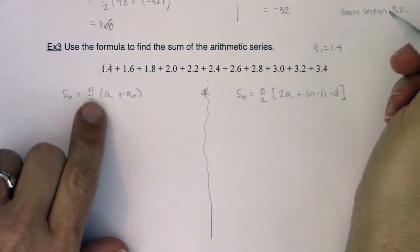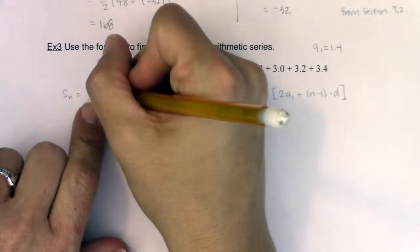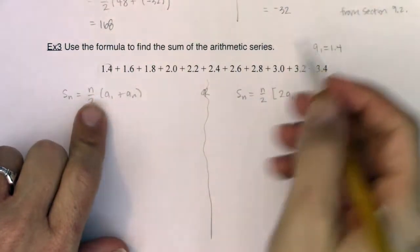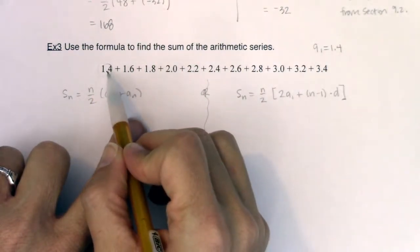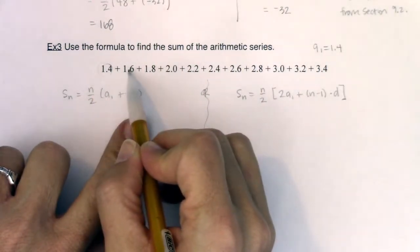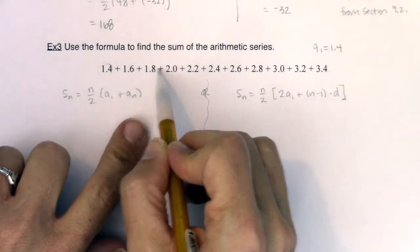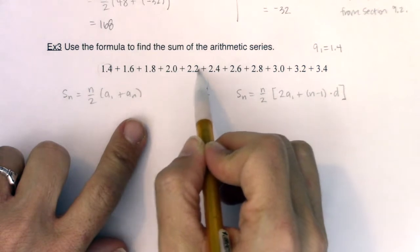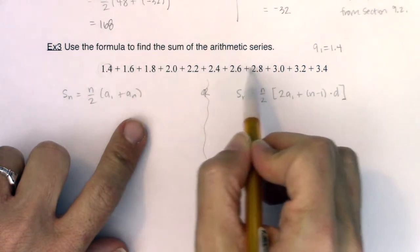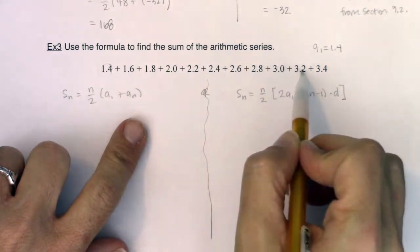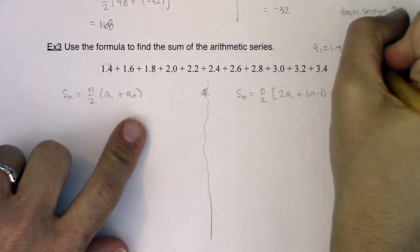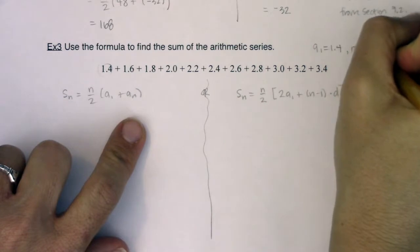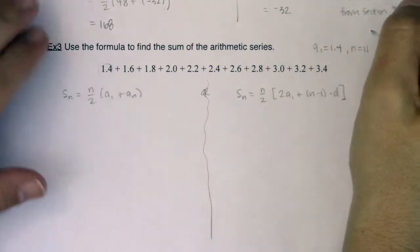Now in terms of n, how many terms am I being asked to add? Counting through: first, second, third, fourth, fifth, sixth, seventh, eighth, ninth, tenth, eleventh. So we can see here that n is equal to 11.